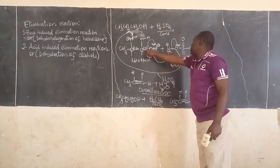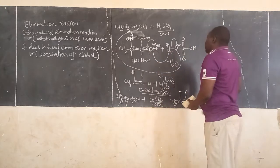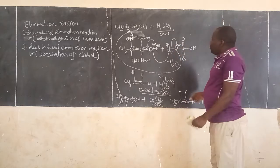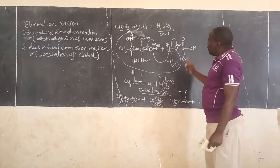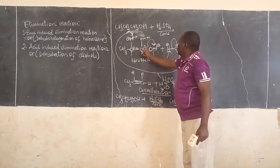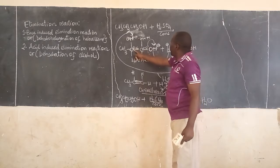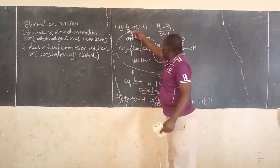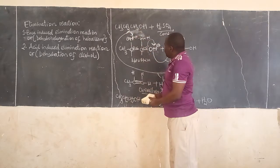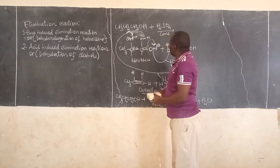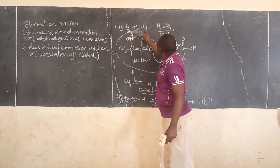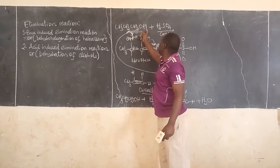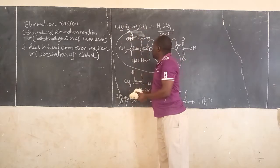In this reaction, we have formed only one alkene product because there was only one beta carbon available. We built the double bond within only one beta carbon, because our OH group was situated at the terminal end of the carbon chain. So, the next step, we are going to look at what happens when the hydroxyl group is attached to an interior carbon.